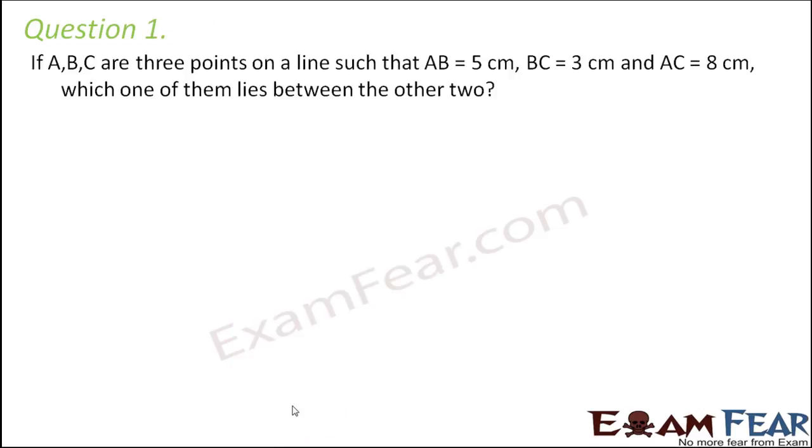Question number 1. If A, B, C are 3 points on a line such that AB is equal to 5 cm, BC 3 cm and AC 8 cm, which one of them lies between the other two?